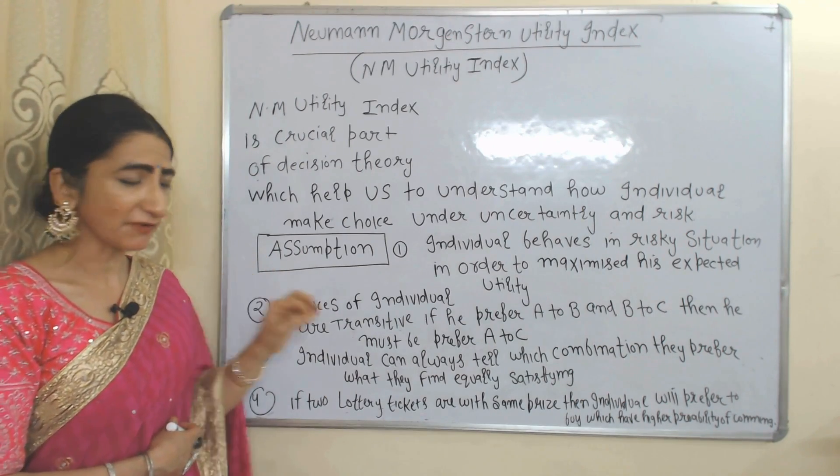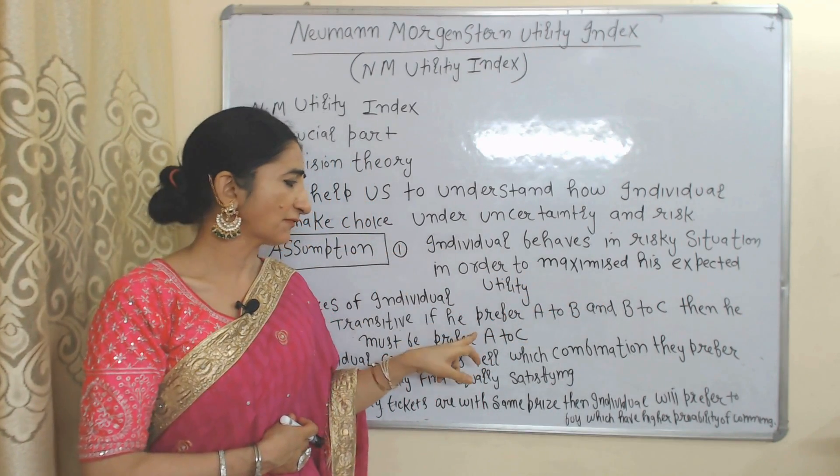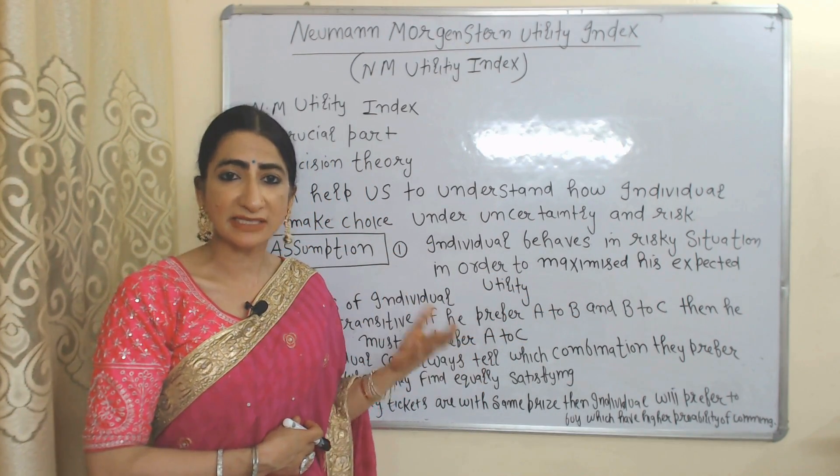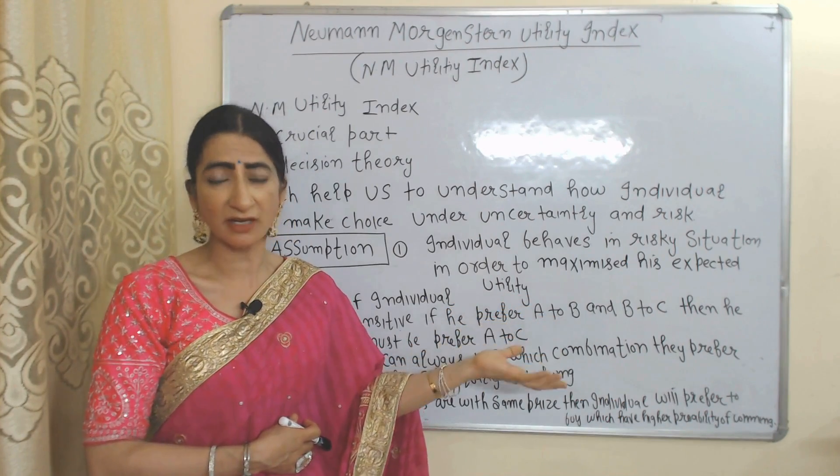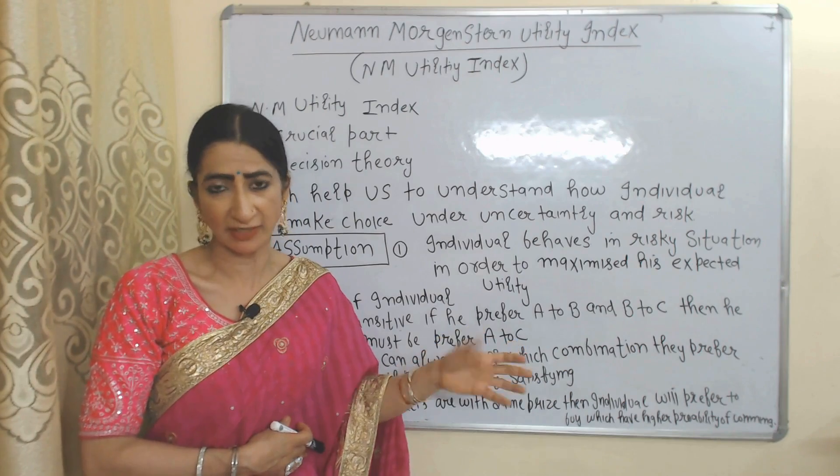Choices of individuals are transitive. That means if we prefer A over B and B over C, then he definitely prefers A over C. This will be called consistency in his behavior because a rational person shows consistency in his behavior, and here we assume individuals are rational.